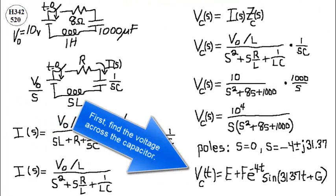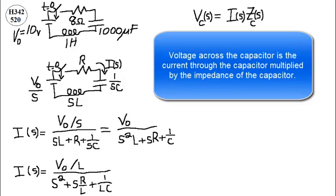First, find the voltage across the capacitor. Voltage across the capacitor is the current through the capacitor multiplied by the impedance of the capacitor.